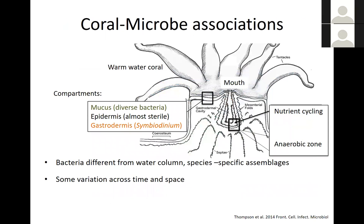As part of this, I've become more and more interested in understanding how the host and its microbiome work together to confront environmental changes. When we look at coral micro-associations, here we have a schematic of a coral polyp. In the center is the mouth, surrounded by tentacles. The central opening leads to the gastrovascular cavity. At the bottom, those squiggly lines are the coral skeleton.